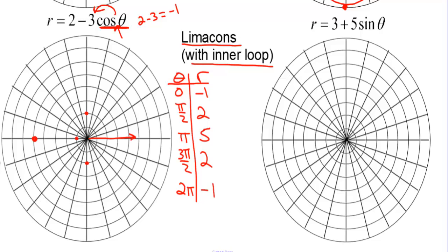Starting with the biggest r at pi — that's 5 — the curve goes a little wider than that point, cuts through the origin, loops around, cuts through the pole again, goes a little wider than the negative-r point, and comes all the way around. There is a limaçon with an inner loop. The key is that r is negative at 0 and 2 pi. We're along the x-axis because we have cosine.